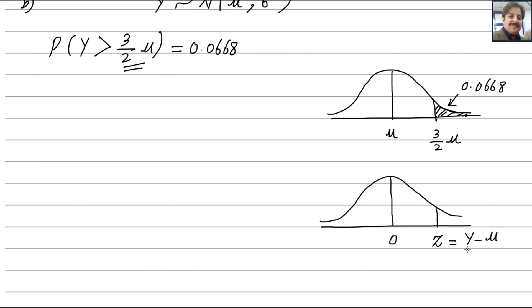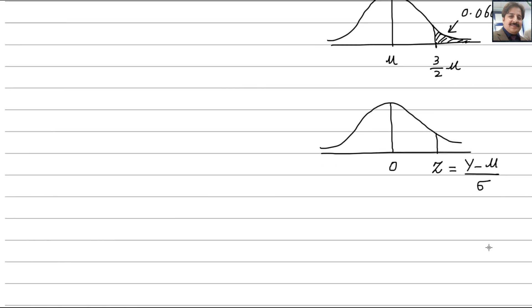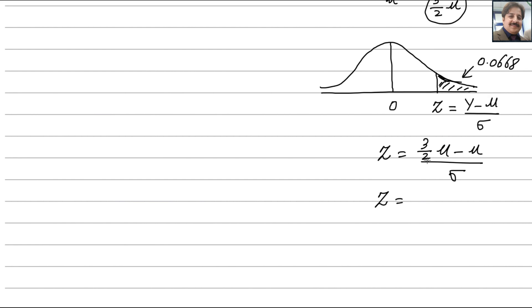The standard formula for finding Z is Z equals X minus mu divided by sigma. Since the random variable here is Y, we write Z equals Y minus mu divided by sigma. Substituting Y equals 3 over 2 mu, the numerator becomes 3 over 2 mu minus mu, which is 1 over 2 mu. So Z equals (1/2 mu) divided by sigma.